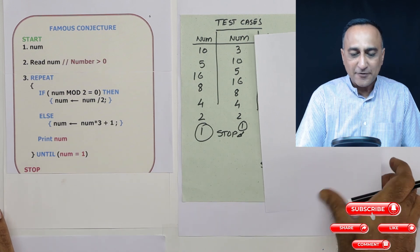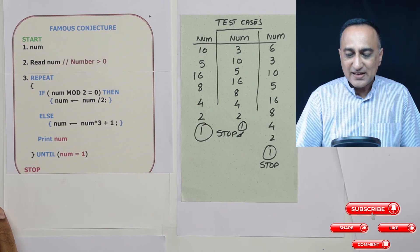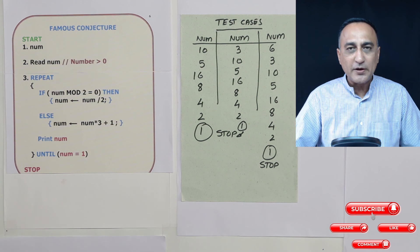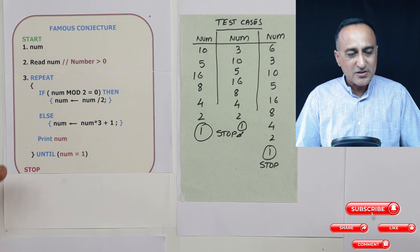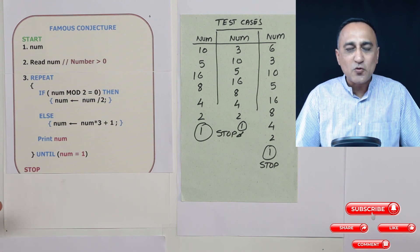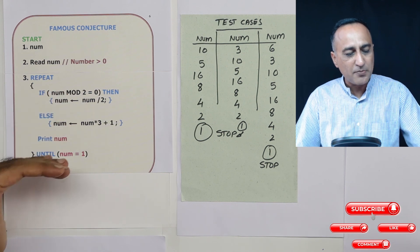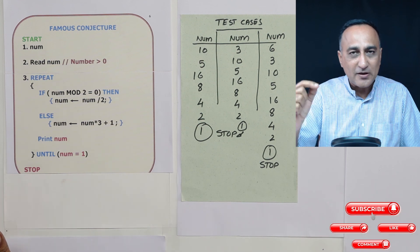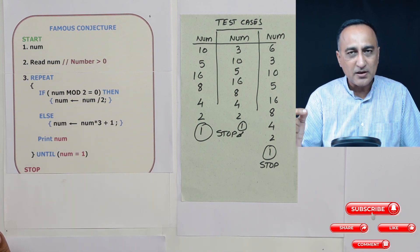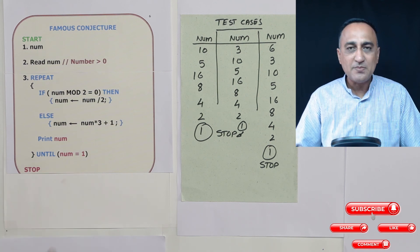The repeat until is different in the sense it will execute the loop as long as the condition remains false. The minute the condition becomes true, it will come out of the loop. And that's what we have done using this famous conjecture. So this is a nice problem because it teaches you to learn logic in a very interesting manner. The thing here is keep repeating that rule of even number divided by 2, odd number multiply by 3 and add 1 to it forever till the number finally becomes 1.